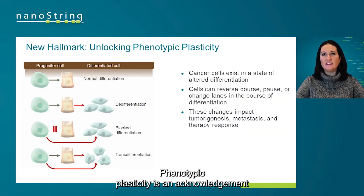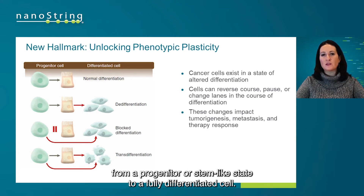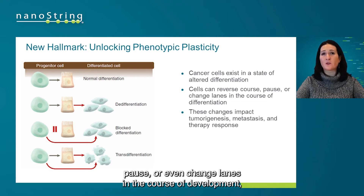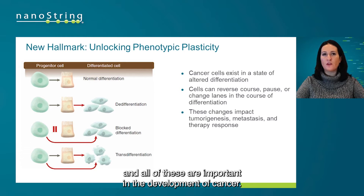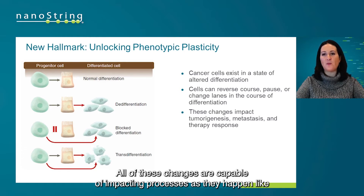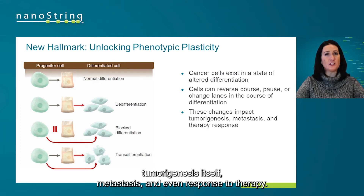Phenotypic plasticity is an acknowledgement that cells are always in a continuum of development from a progenitor or stem-like state to a fully differentiated cell. These cells can then reverse course, pause, or even change lanes in the course of development, and all of these are important in the development of cancer. All of these changes are capable of impacting processes like tumorigenesis itself, metastasis, and even response to therapy.